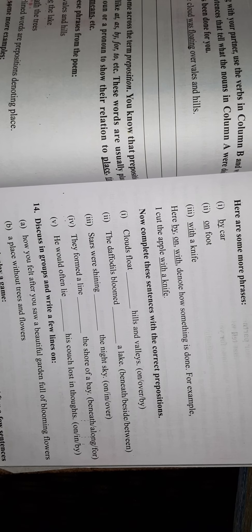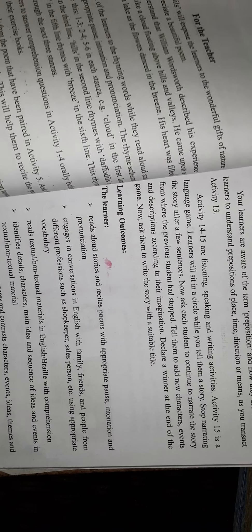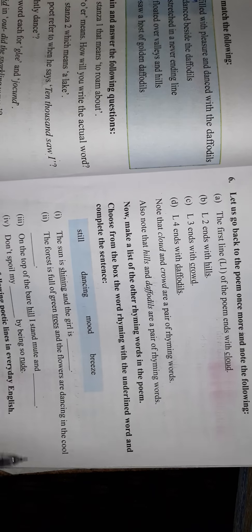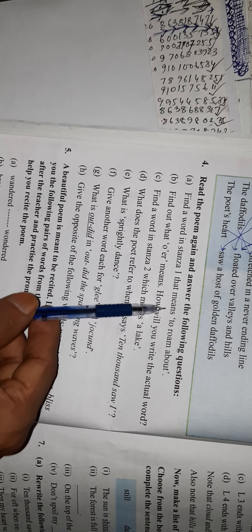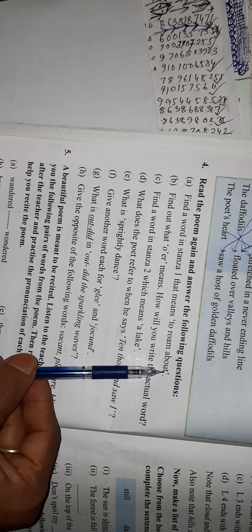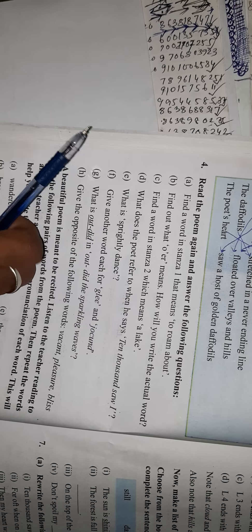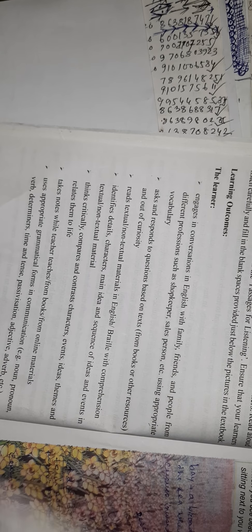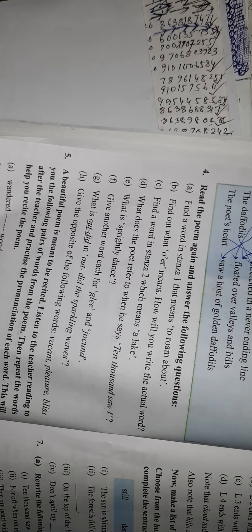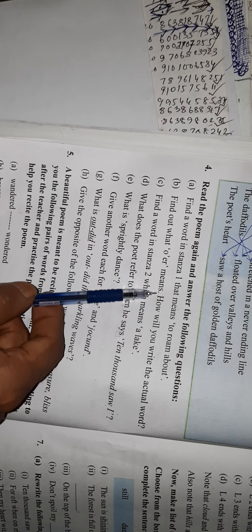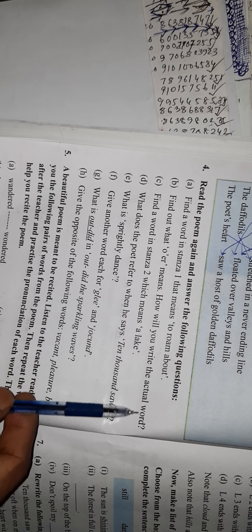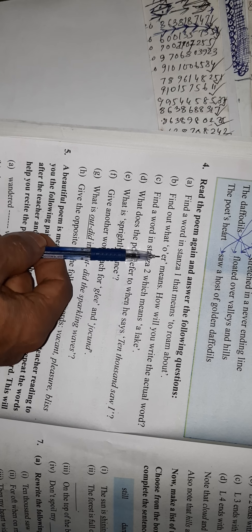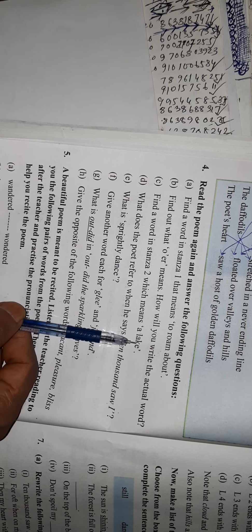Find the word in stanza to roam about. Roam about means wandered. Wandered. Stanza 2 which means a lake. Lake means bay.